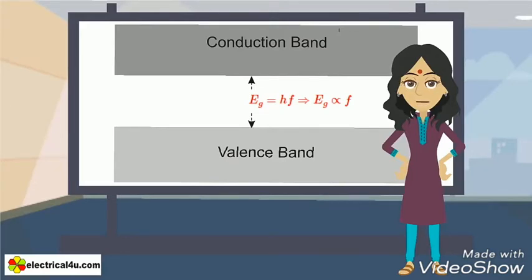We have already said that photon will release in all electron hole recombination, but light only emit in LED. Let us explain why.